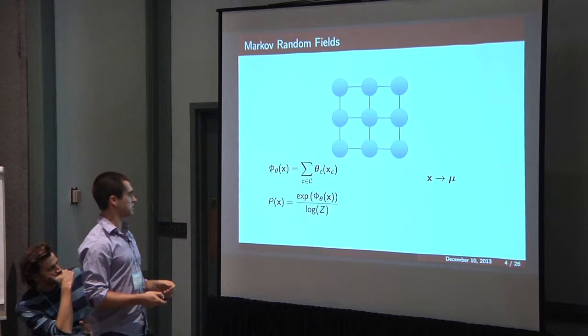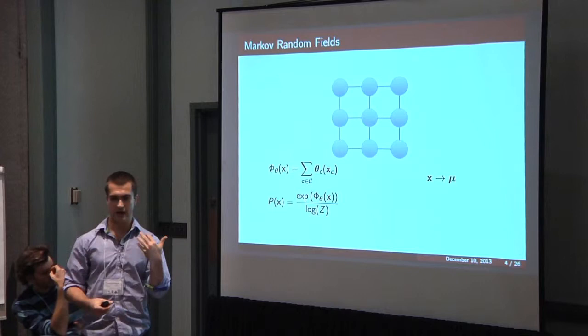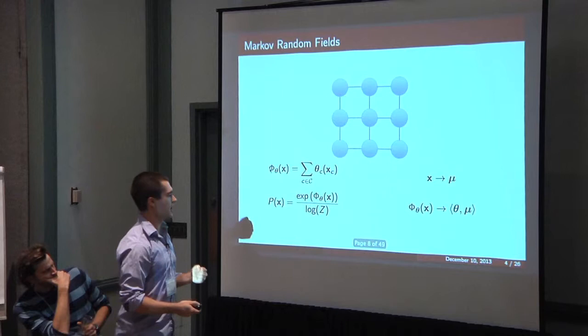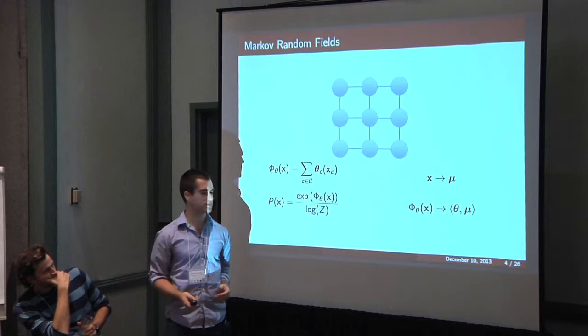One standard maneuver in graphical models is that you don't actually think in terms of X which is the nodes. You think of some vector mu which is this really long vector that has information for the setting of every possible clique. The reason is that when you do that, the energy becomes a linear function. So you have this linear function in this much higher dimensional space, but it's easier to work with.